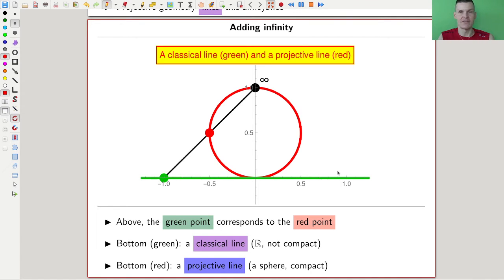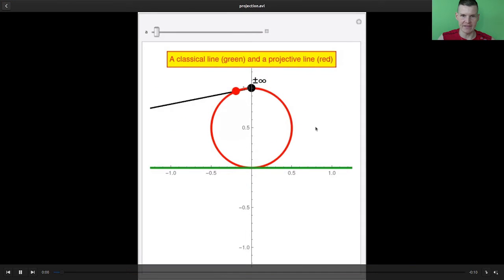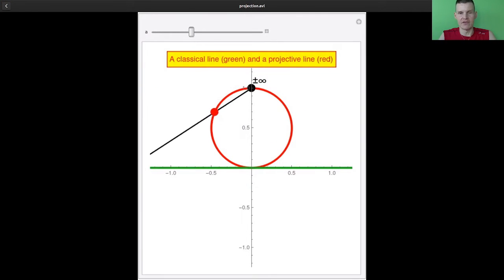is not compact, and the projective line, the sphere, is compact. And the relation between them is a stereographic projection, which I could run all day in this nice illustration here.